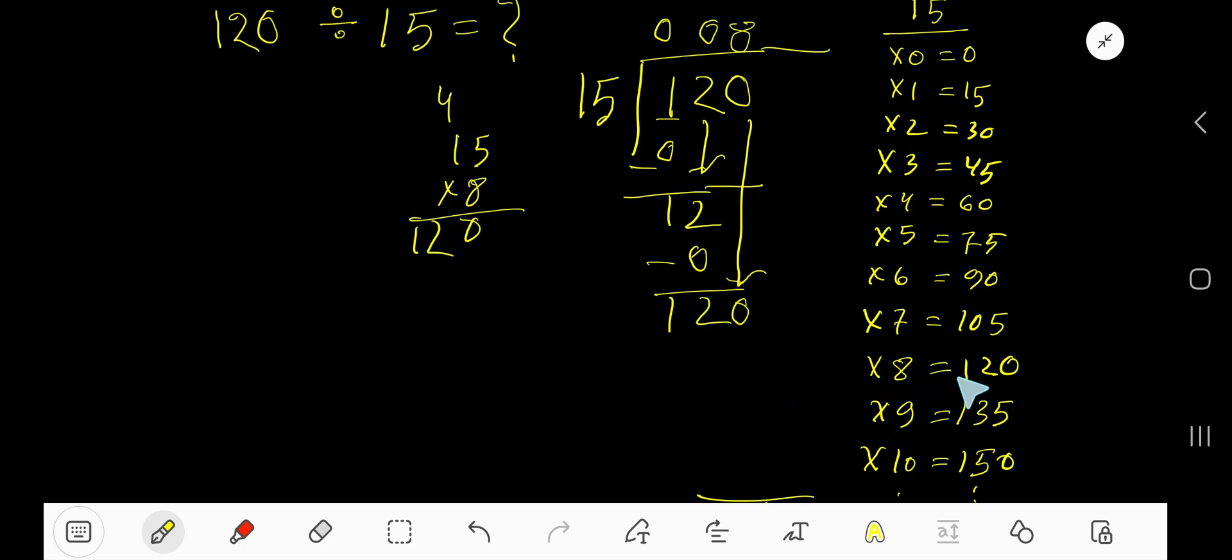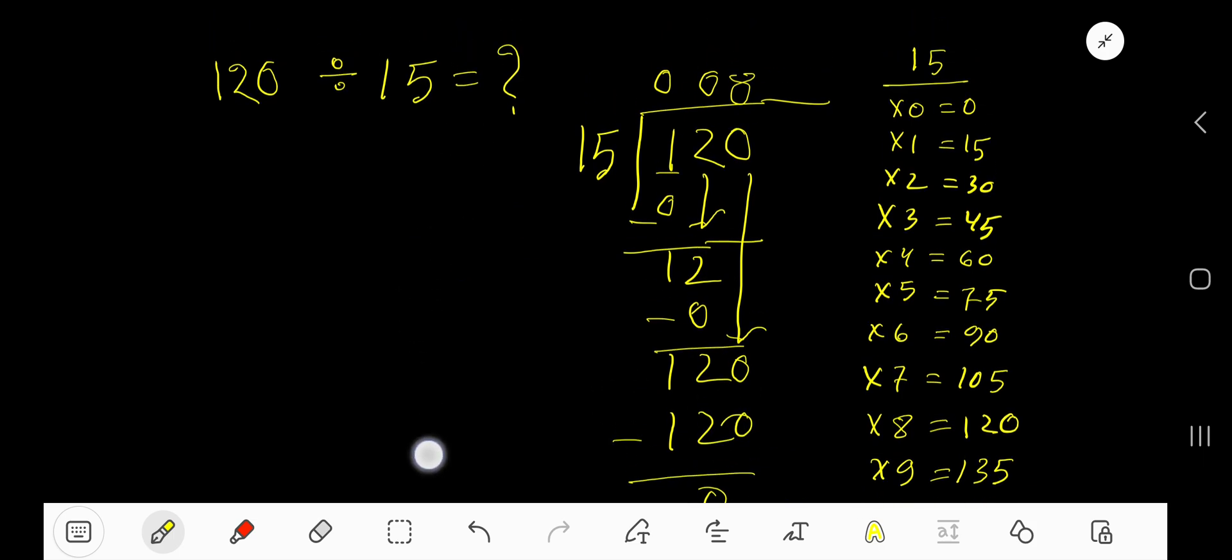120. Right? Already we know it. So 120. Subtract 0. So as our remainder is 0, we are done.